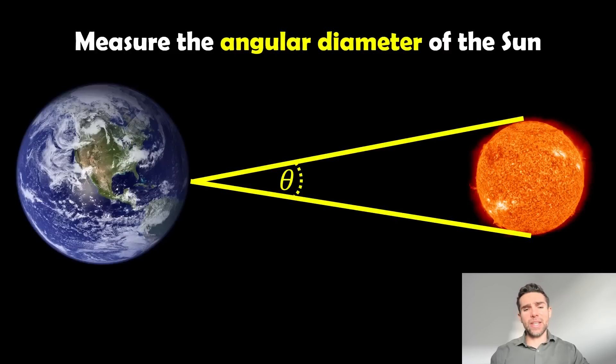Now that we have the distance to the Sun, we need to measure the angular diameter of the Sun. If we were to look at the Sun from Earth, it will create an angular size on the sky, so we can actually measure that angle.